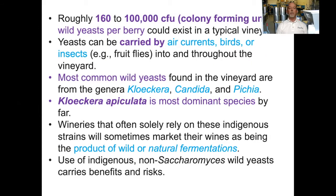Roughly 160 to 100,000 colony-forming units of wild yeast per berry could exist in a typical vineyard. Yeast can be carried by air currents, birds, or insects including fruit flies, into and throughout the vineyard. The most common wild yeast found in the vineyard are from the genera Kloeckera, Candida, and Pichia. Kloeckera apiculata is the most dominant species by far. Wineries that solely rely on these indigenous strains will sometimes market their wines as being the product of wild or natural fermentations.